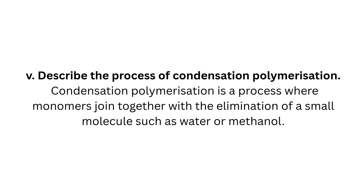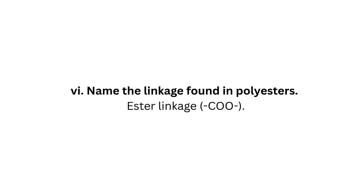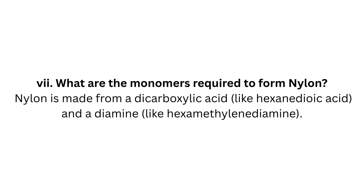Question 5: Describe the process of condensation polymerization. Condensation polymerization is a process where monomers join together with the elimination of a small molecule such as water or methanol. Question 6: Name the linkage found in polyesters. Ester linkage — COO.